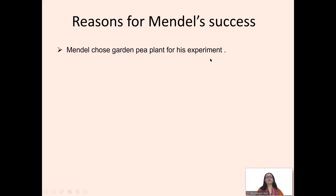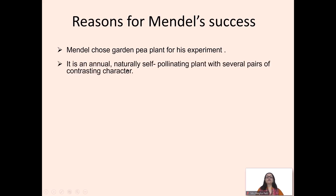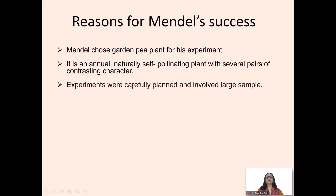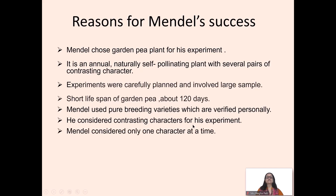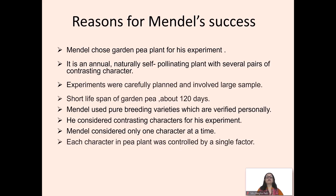Reasons for Mendel's success: Mendel chose the garden pea plant for his experiment — it is an annual, naturally self-pollinating plant with several pairs of contrasting characters. These experiments were carefully planned and involved large samples. The short life span of garden pea is about 120 days. Mendel used pure breeding varieties which were verified personally, considered contrasting characters, and studied only one character at a time. The pea plant characters were controlled by a single factor.